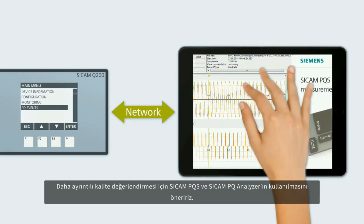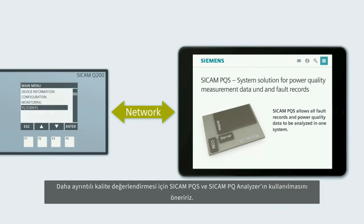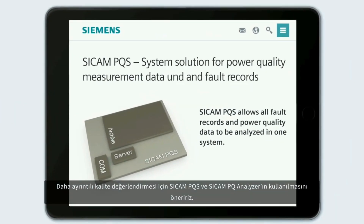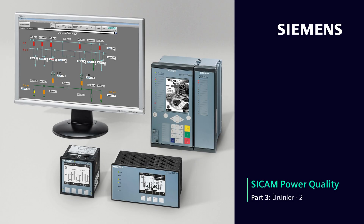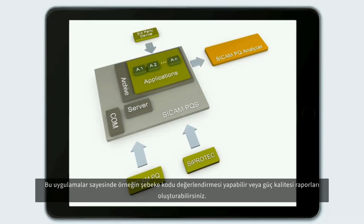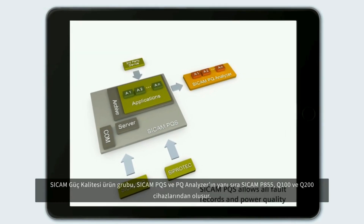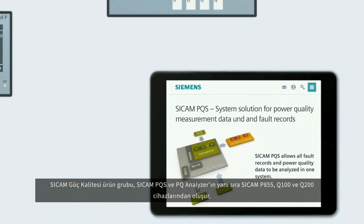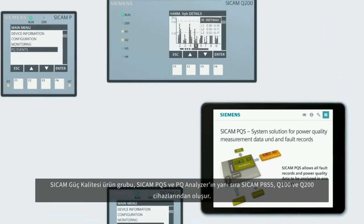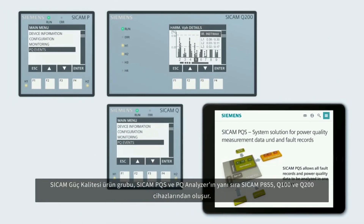For more detailed ongoing grid quality evaluation, we recommend Secamp PQS and Secamp PQ Analyzer. Additional applications enable, for example, grid code evaluation or the generation of power quality reports. Secamp PQS, PQ Analyzer, and the Secamp P855, Q100, and Q200 devices — all together are Secamp Power Quality.